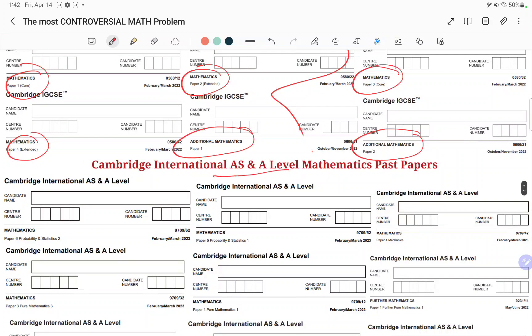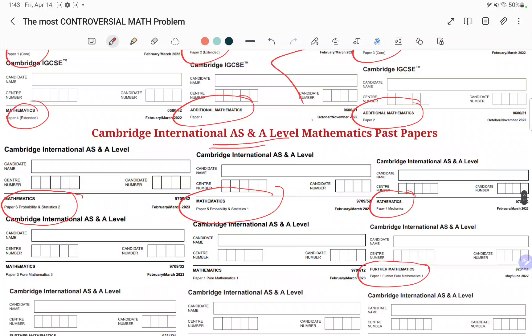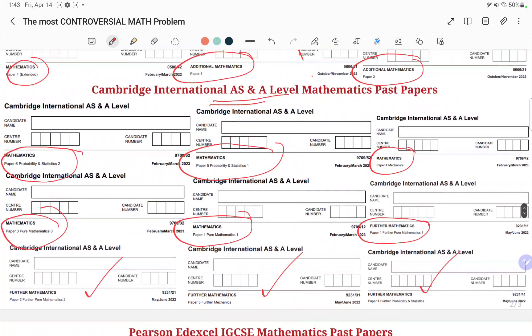Or if you talk about AS and A Level, then I will cover Paper 6, Probability and Statistics 2, Paper 5, Probability and Statistics 1, Paper 4, Mechanics, and Paper 1, Further Mathematics, Paper 1, Pure Mathematics 1, Paper 3, Pure Mathematics 3, and this is Further Mathematics, Further Mechanics, and Further Probability and Statistics. This is based on Cambridge Curriculum.